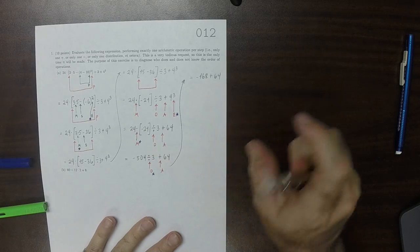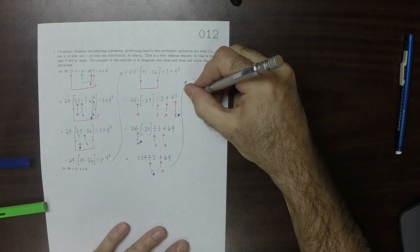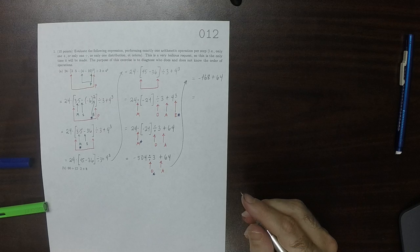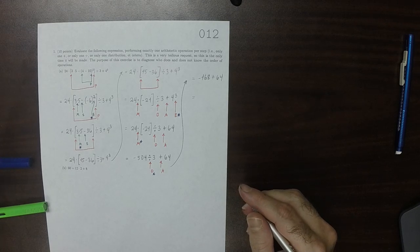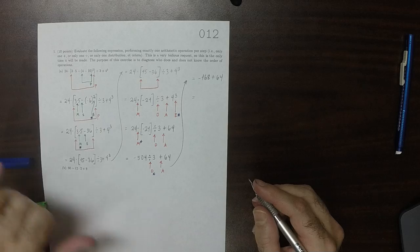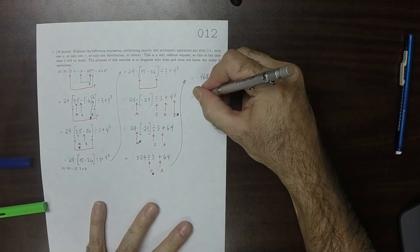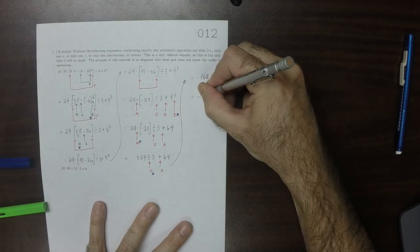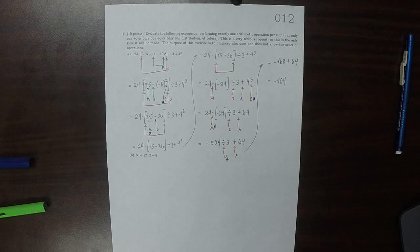There's only one arithmetic operation left, so that's the one we do. That would be negative 104. For part B...